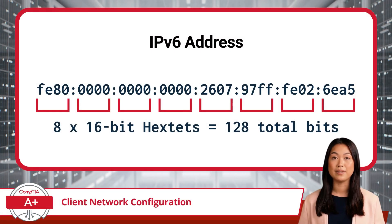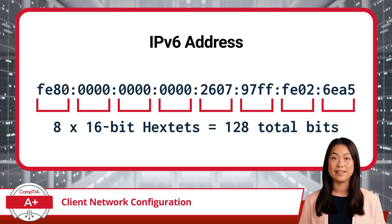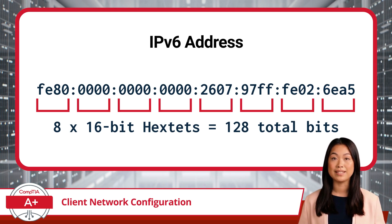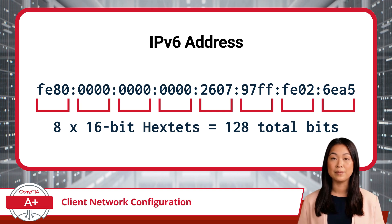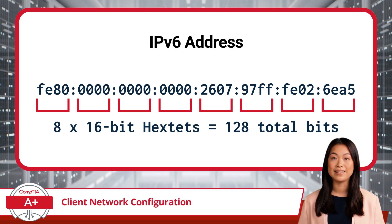IPv6 addresses are considerably longer than an IPv4 address, at 128 binary digits long, and use a different addressing scheme. IPv6 addresses include 8 groups of 4 hexadecimal digits separated by colons. Each group of 4 hexadecimal digits can also be called a hextet.